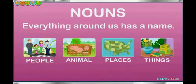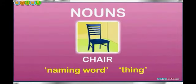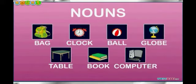All these things are nouns. Nouns are also called naming words. For example: mother, father, cow, table, book, school, cat, etc. Chair is a naming word for a thing. Similarly, bag, clock, ball, globe, table, and book are all nouns.